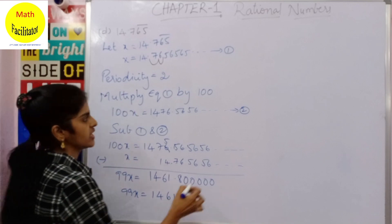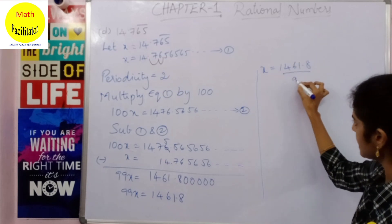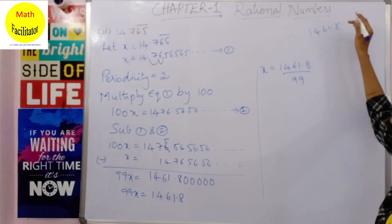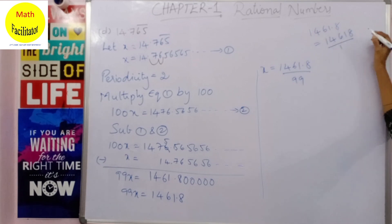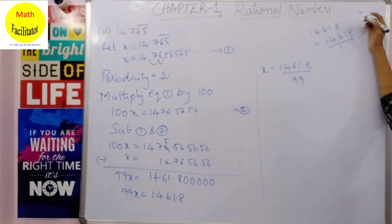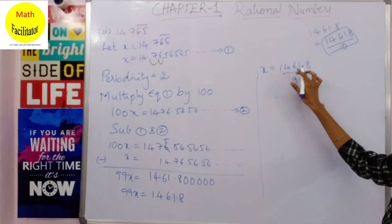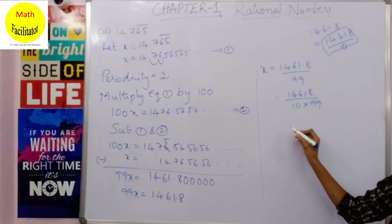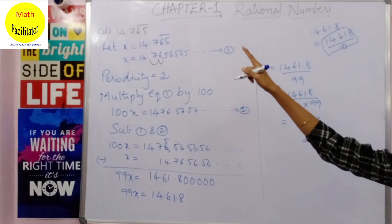So x = 1461.8 / 99. But there is still a decimal in the numerator. Converting 1461.8 to a fraction: one decimal place means 1461.8 = 14618/10. Substituting: x = 14618 / (10 × 99) = 14618/990. This is how you convert a non-terminating mixed recurring decimal into rational form.